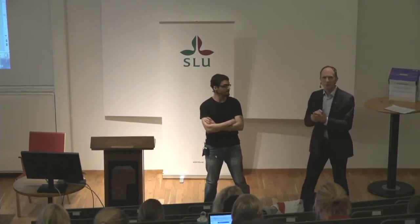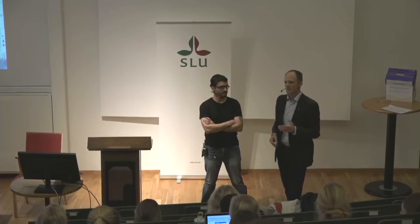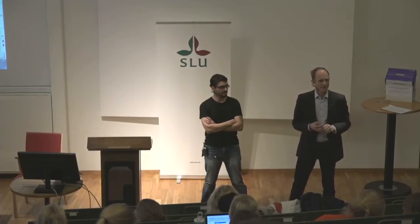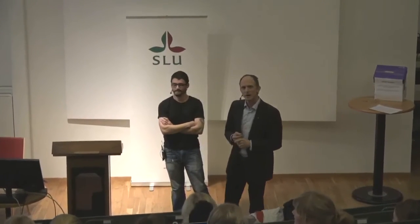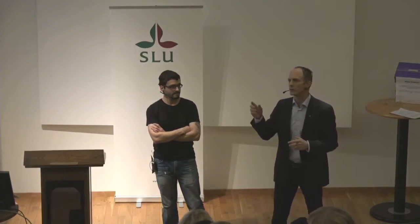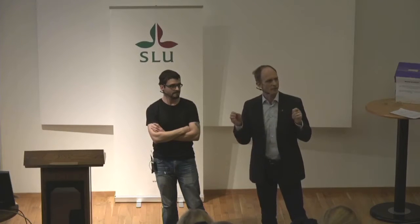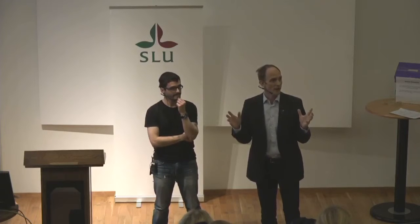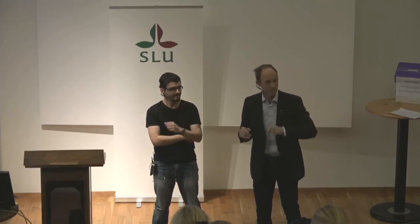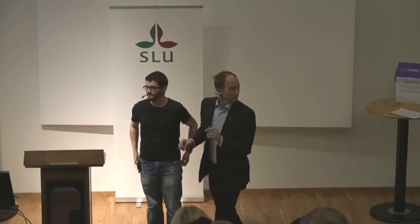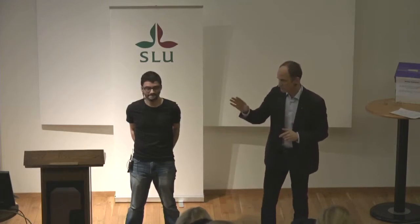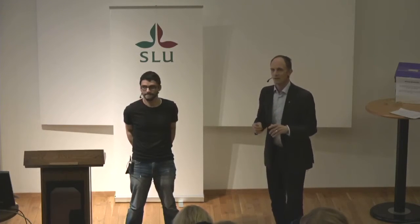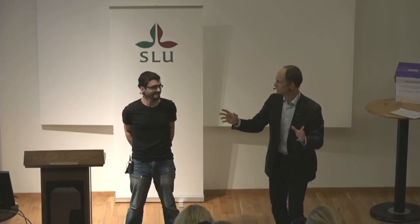Now we're going to move to the voting. The jury, the post-it people, and the phone carriers are supposed to vote at the same time. The voting system is set up such that you can give between one and five points, and five is not only more — it's also better. So five is the best score one can get. The jury, of course, is able to give up to ten points. So please vote.